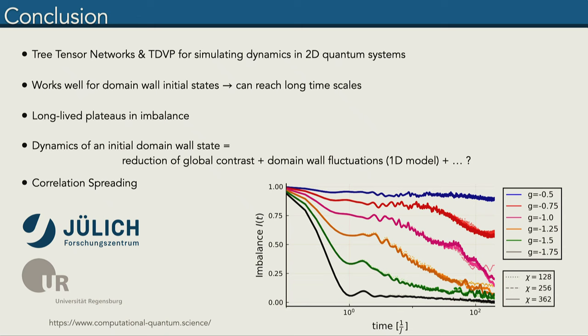Just to summarize, we have this method of Tree Tensor Networks and time-dependent variational principle, which we can use to simulate dynamics in two-dimensional quantum systems. Especially for these domain wall initial states, we can reach quite long times, which in turn allows us to observe these very long-lived plateaus. We came up with an effective model to describe the dynamics of these plateaus in terms of the global reduction in contrast and a fluctuating domain wall. Furthermore, we looked at the correlation spreading, which gave us a hint that there's maybe some kind of transition happening at some intermediate value in g over J. Thanks a lot for your attention.